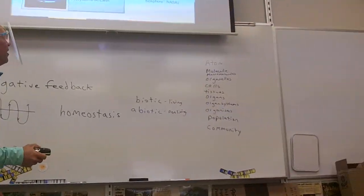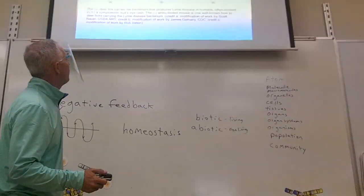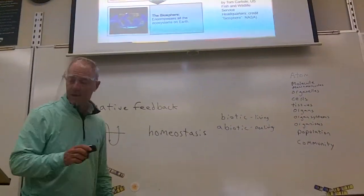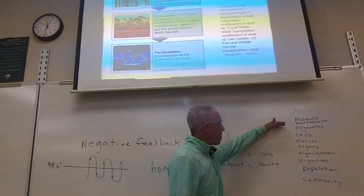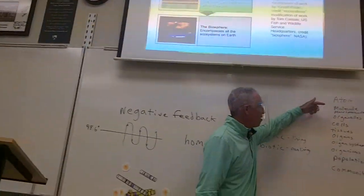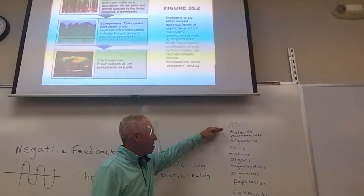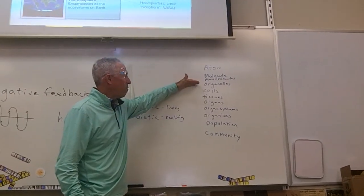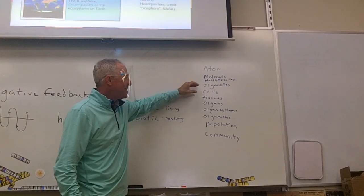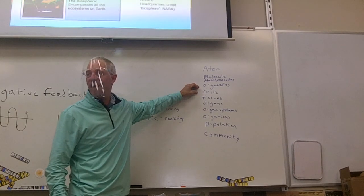So for those viewing at home, this is Chapter 35. We have this hierarchy: a bunch of atoms make molecules, molecules make macromolecules, macromolecules make organelles, organelles make cells. A cell is the smallest unit of life.